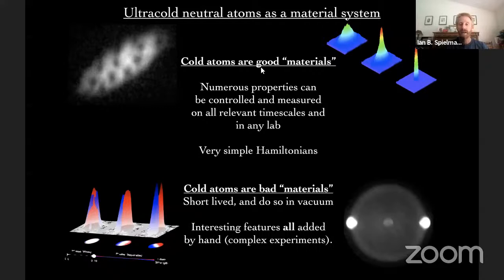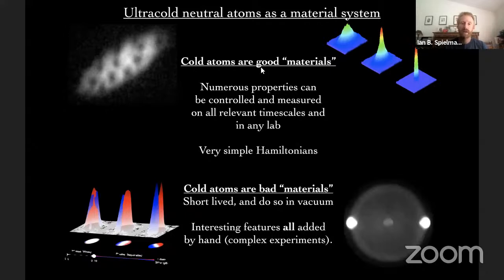Another advantage is that the Hamiltonians are very simple. As an experimentalist, I can have really good collaborations with theorists because the starting point is: here's my microscopic model, I've calibrated it carefully, what's the physics? This is by contrast with most many-body physics where the microscopic Hamiltonian is so complicated that step one is making an effective description, and then you fight about the effective descriptions rather than having a common starting point.